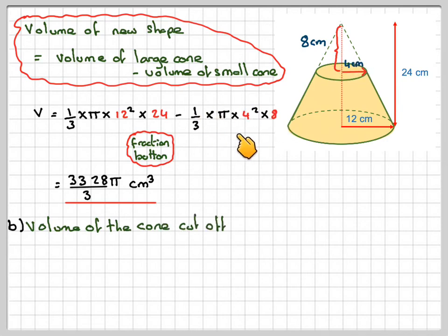So we've already sort of calculated it here. It's 1/3 π times 4 squared times 8. Work that out and I'll calculate it in exact form again: 128π divided by 3.